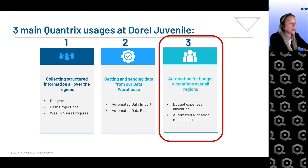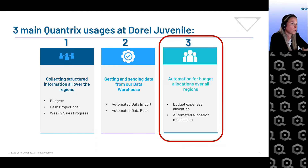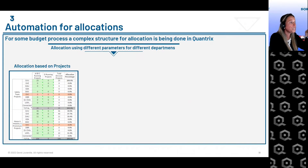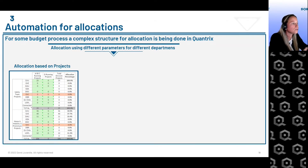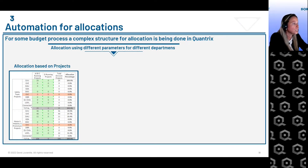The third use case is a model we use to automate our allocations for budget purposes. It's a very powerful way to do it in Quantrix. We have a cost center whose costs need to be allocated across our divisions — each division has to absorb a portion of those costs. In the model we have different methods of allocation to determine the final allocation used for budget purposes.